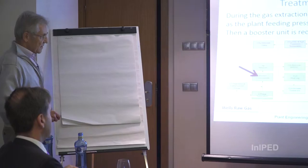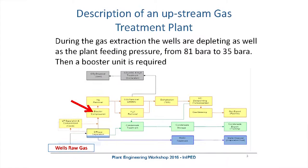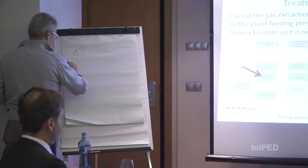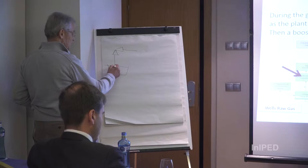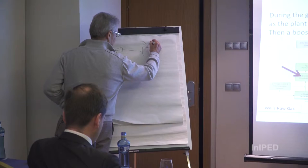Normally, the required pressure to feed the gas into the plant is more or less between 80 and 90 bars, according to the process. At the very beginning, in the wells, we have pressure enough to send the gas through a choke valve. In the wells, we have a choke valve — the pressure from the wells could be, at the beginning, 300 bars, and with these choke valves, we reduce the pressure to around 80 or 90 bars, according to the process of the treatment plant.